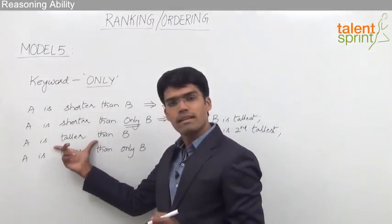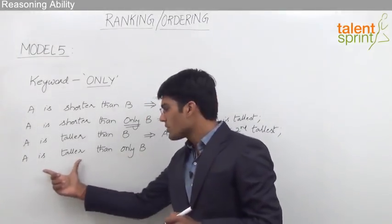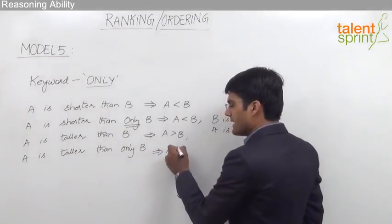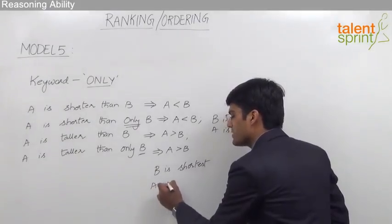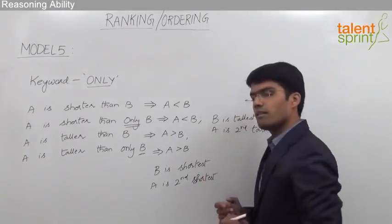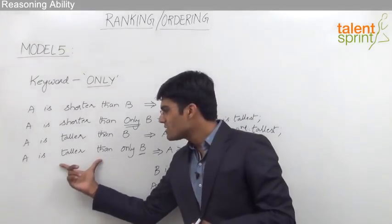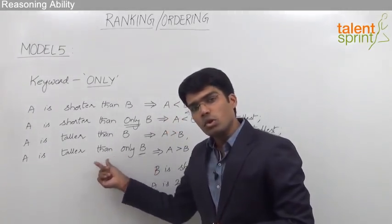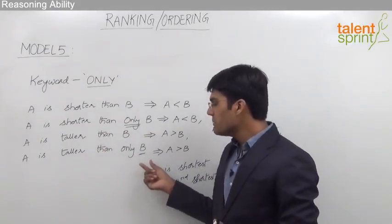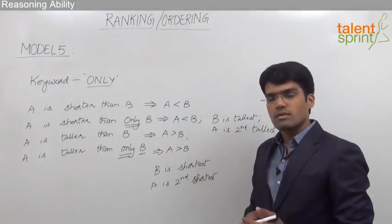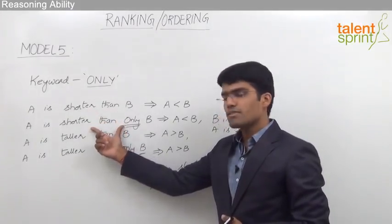In a similar manner, 'A is taller than B' has a direct meaning. But when the word 'only' is used — 'A is taller than only B' — we understand that A is greater than B, but B is the shortest person in the group and A is the second shortest. For example, with five persons A, B, C, D, and E, 'A is taller than only B' means A is not taller than C, D, or E, so C, D, and E are all taller than A. Thus B is the shortest and A is the second shortest. Notice that 'A is shorter than B' is different from 'A is shorter than only B.'